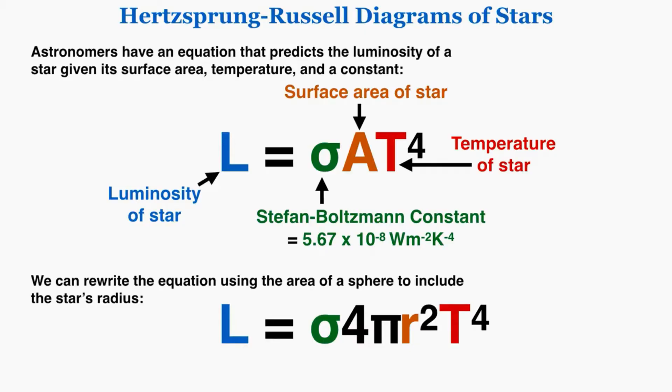Because all stars are spheres, we can rewrite that surface area as the surface area of a sphere to get the bottom equation that includes the radius of the star.